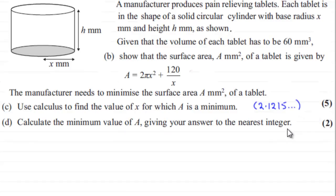And we found out that this minimum value occurred in the previous part when X was 2.1215 and so on. So all we've got to do is just substitute this value into our equation here for A.